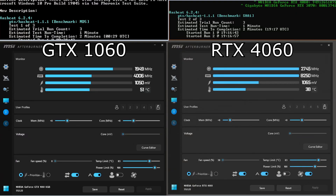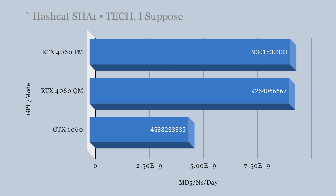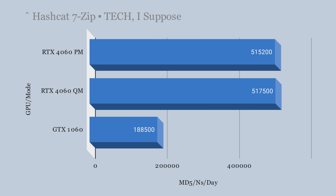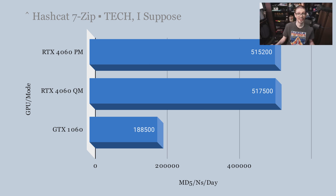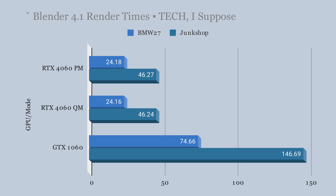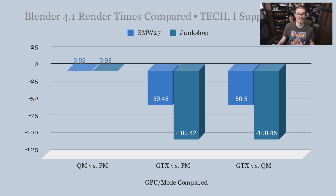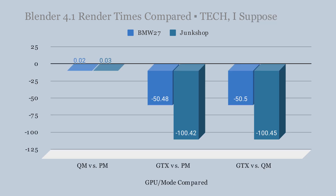In the Hashcat benchmark with MD5 cryptography, there's a definite benefit with the 4060 compared to the 1060, and no real difference between the 4060's two modes. SHA-1, which is more advanced, also shows a benefit with the 4060. 7-zip again shows another benefit to the 4060. In Blender 3D rendering — where lower scores are better — the 4060 is significantly faster to render scenes compared to the 1060, and by a pretty significant amount.